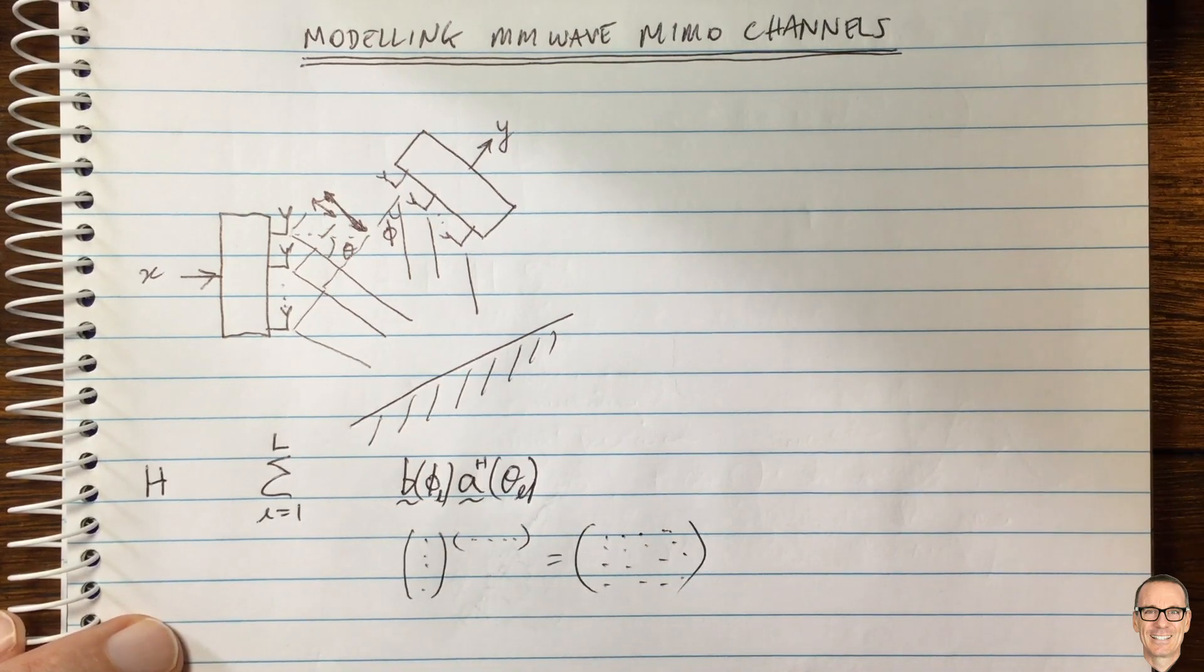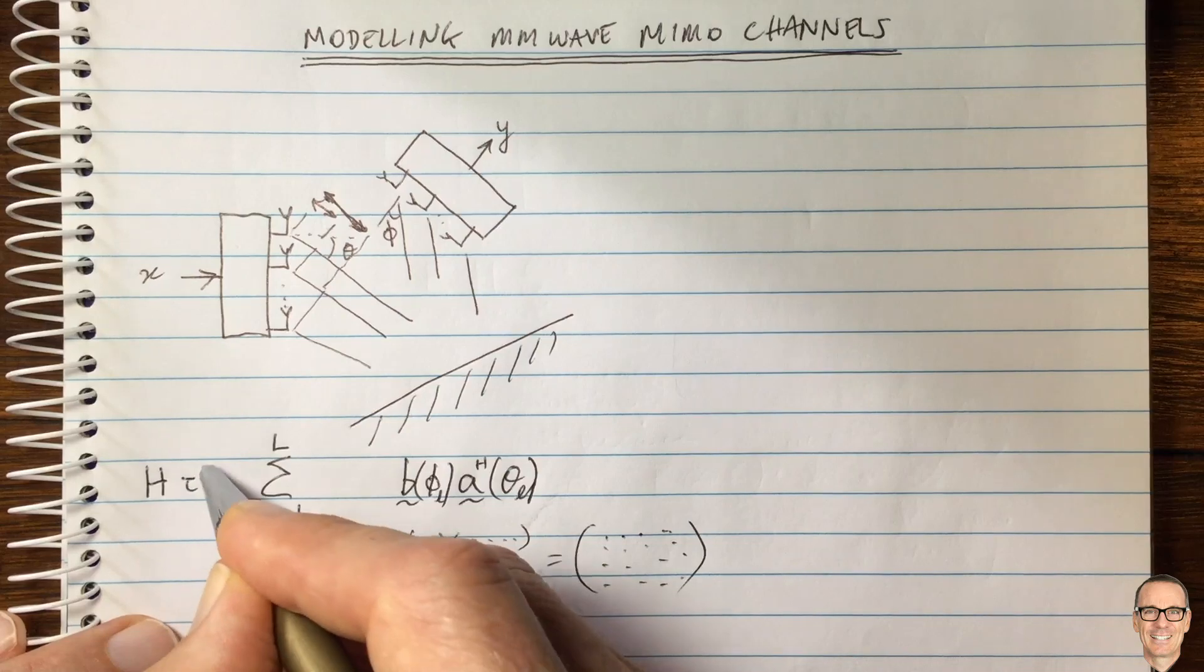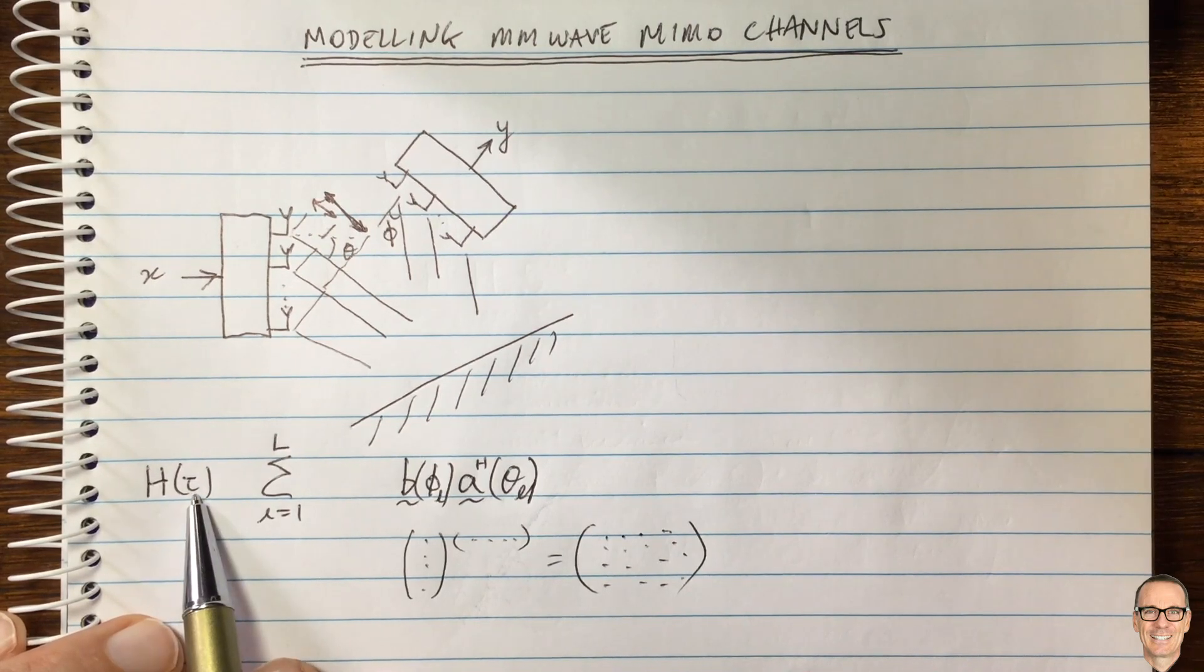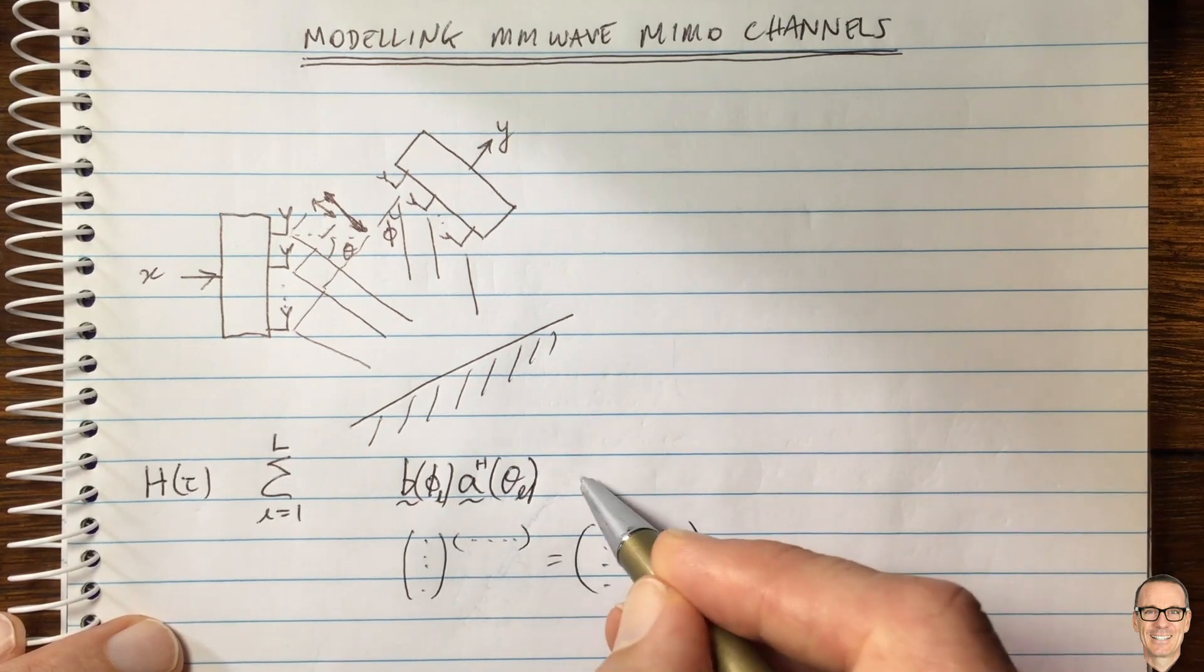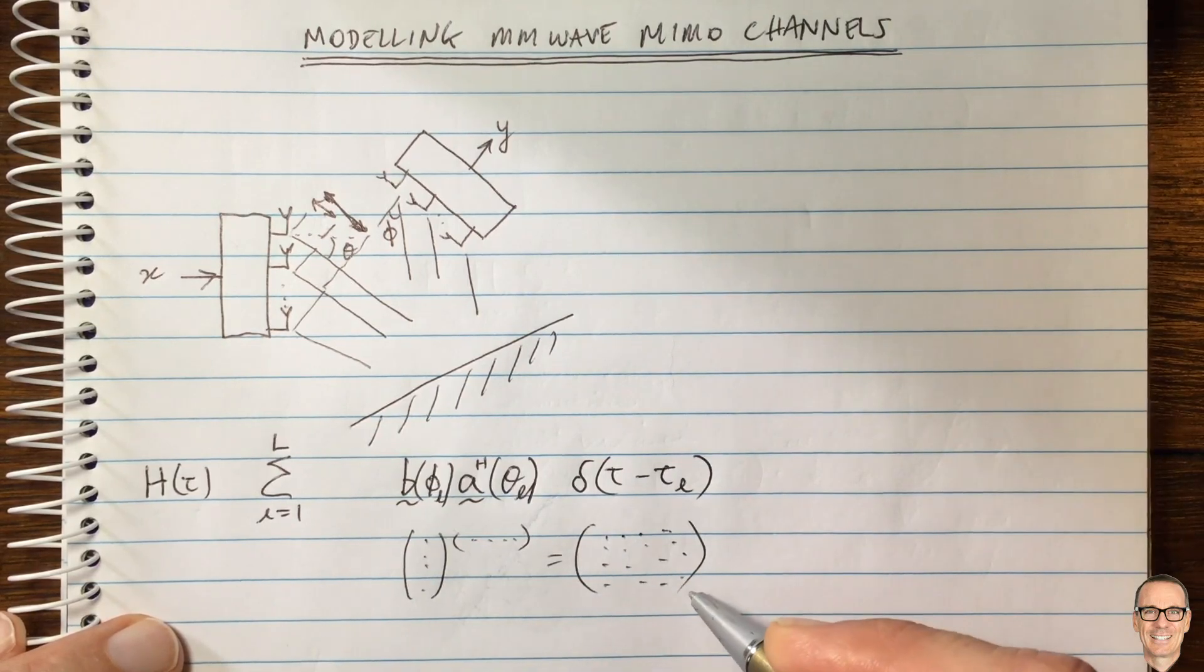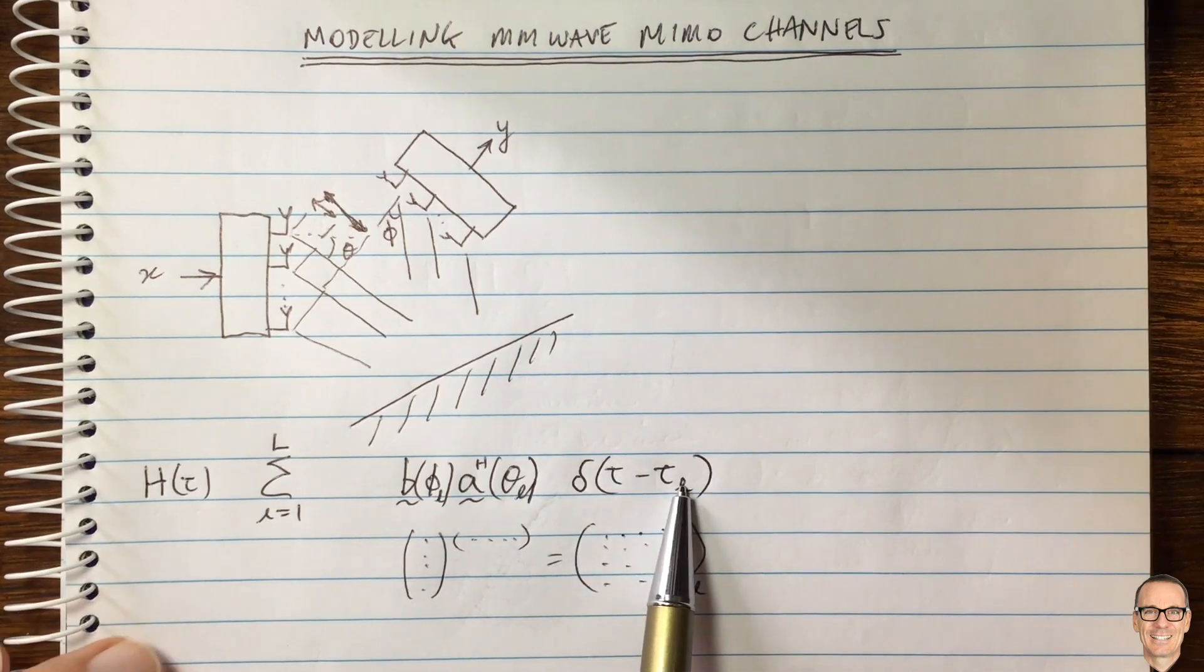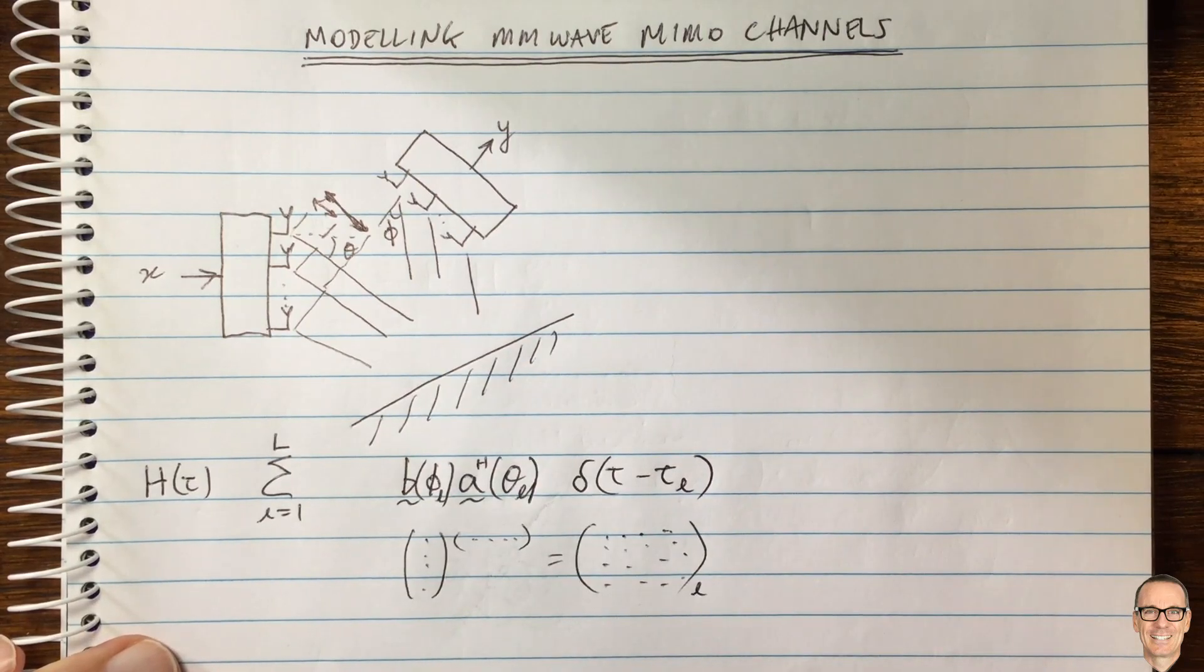Okay, so this is we're building up an equation here. So now the next thing to note is that these paths are going to have a certain delay. So our channel matrix is going to, there's going to be a time element. So this is going to be a time dependent, a delay dependent matrix. So there's going to be a matrix for each different delay value tau. Okay, so where does that appear in here? Well, we're going to have a delta, which is tau minus tau for the L path. Okay, so this matrix is going to hold for the L path, the L path, this matrix is going to hold and exist only for that delay tau L, which corresponds to the delay between the transmitter and the receiver bouncing off that reflector there.